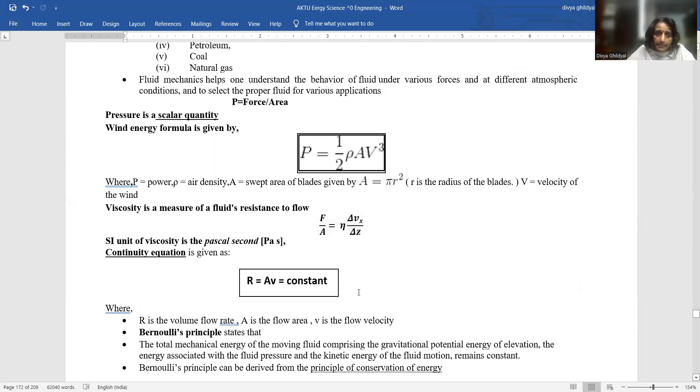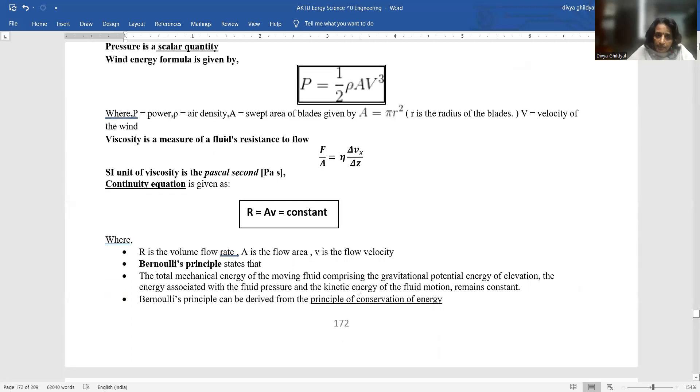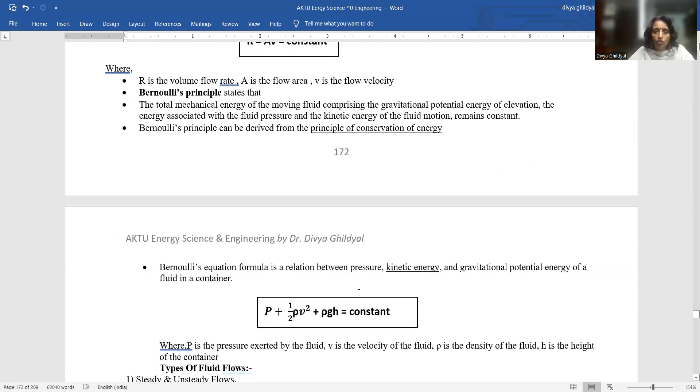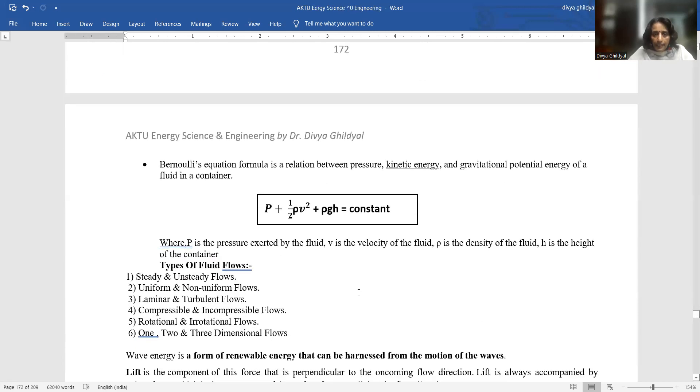Continuity equation is area into velocity is a constant. Bernoulli's principle states that the total mechanical energy of the moving fluid comprising the gravitational potential energy of elevation, energy associated with the kinetic energy of the motion of my fluid, and energy associated with fluid pressure is a constant. Bernoulli's principle gives the principle of conservation of energy. Formula is P plus half rho V square plus rho GH equal to constant where P is pressure exerted by the fluid, V is velocity of fluid, rho is density of fluid, H is height of container, half rho V square is kinetic energy per unit volume, rho GH is potential energy per unit volume.